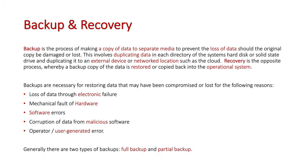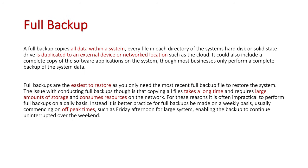Generally there are two types of backups: full backups and partial backups. A full backup copies all the data within the system — every file in every directory within the system's hard drive or solid state drive — duplicated to an external device, whether it be a separate hard drive or something on a server such as the cloud.